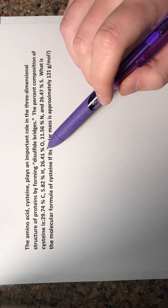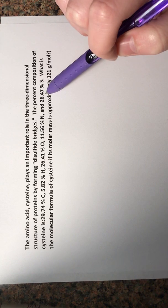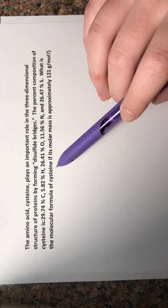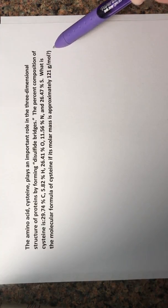It says the amino acid cysteine plays an important role in the three-dimensional structure of proteins by forming disulfide bridges. The percent composition of cysteine is 29.74% carbon, 5.82% hydrogen, 26.42% oxygen, 11.56% nitrogen, and 26.47% sulfur. What is the molecular formula of cysteine if its molar mass is approximately 121 grams per mole?